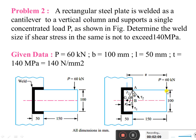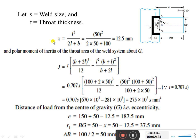This x value we can take from the data book, PSG data book. Let S be weld size and T is throat thickness. Here in this problem we are going to find out the size of the weld S.